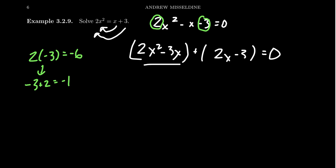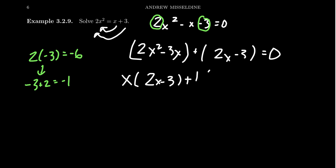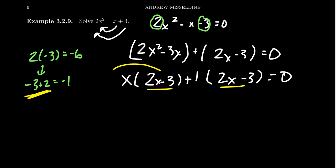So when you look at the first group, what's your common divisor? The biggest thing you can pull out is an x. We factor out an x, which leaves behind two x minus three. When you look at the second group, what's the biggest thing you can take out? We can always take out a one, because when you factor out a one it doesn't really do anything — one is the greatest common divisor. As we must factor out something, we're going to factor out a one. Since you chose your magic pair correctly, these terms should be identical, and if we factor out the two x minus three as that common divisor, you're going to get two x minus three times x plus one equals zero.